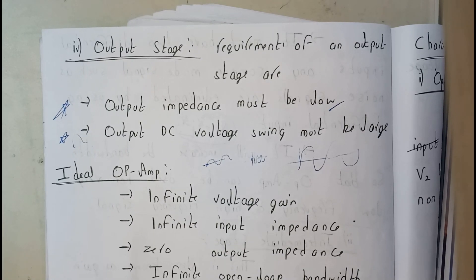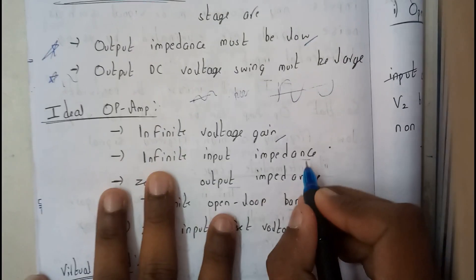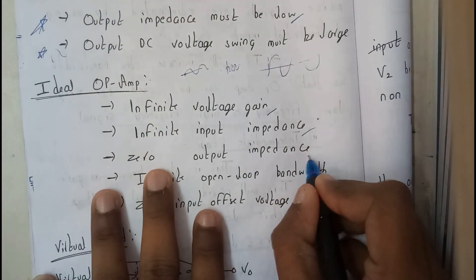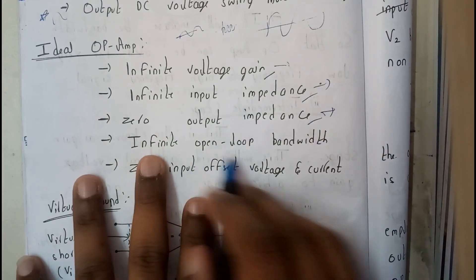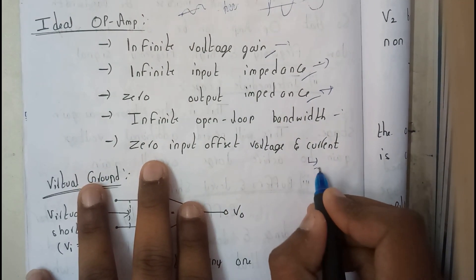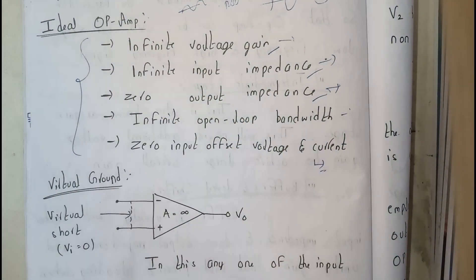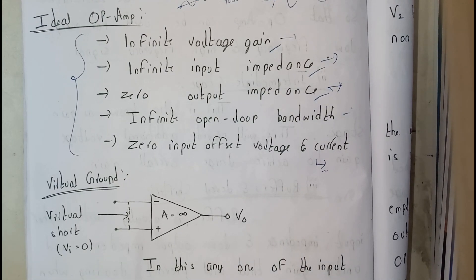So now let us go through the ideal conditions. Ideally, voltage gain will be infinity, input impedance infinity, output impedance 0 as it should be minimum. And voltage gain should be more. Infinity open loop bandwidth, zero input offset current. So these are the few ideal conditions of an operational amplifier guys. So now I hope everyone got a small idea on this.